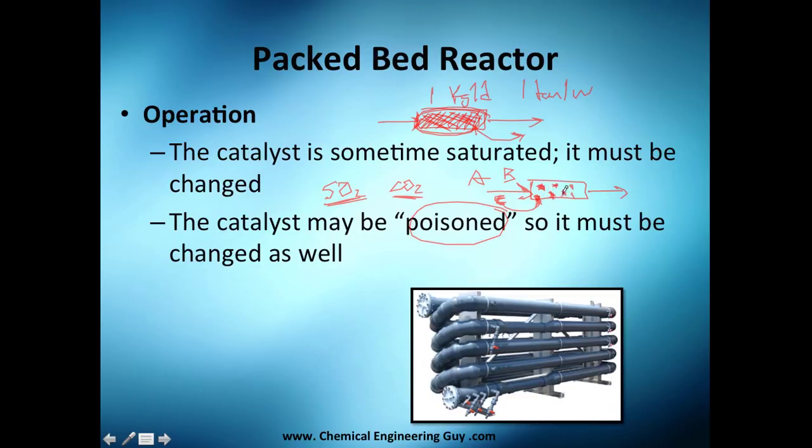So as time passes by, you're going to fill all those small spots, active sites, and A and B are no longer going to react there. And since they don't react, they go out, and you're not going to have your reaction. So we say that the catalyst is poisoned when material starts invading our active sites. So what you're going to do is you need to change the catalyst bed as well.